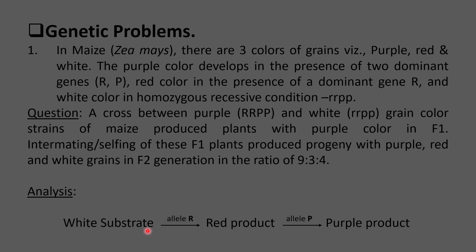The first genetic problem is the inheritance of grain color in maize. Purple, red, and white color grains are produced. Purple color develops in the presence of two dominant genes R and P; red color in the presence of dominant gene R alone; and white color in homozygous recessive condition (rr pp). A cross between purple and white grain color strains of maize produced plants with purple color in F1 generation, and self-crossing of these F1 plants produced progeny with purple, red, and white grains in F2 in the ratio 9:3:4.